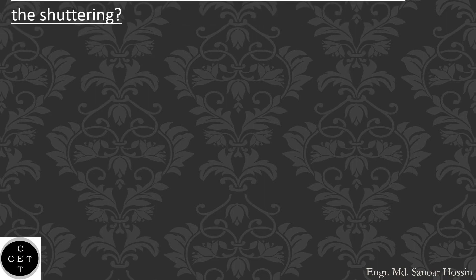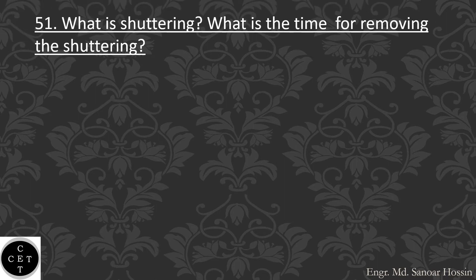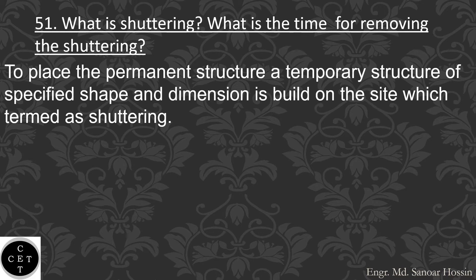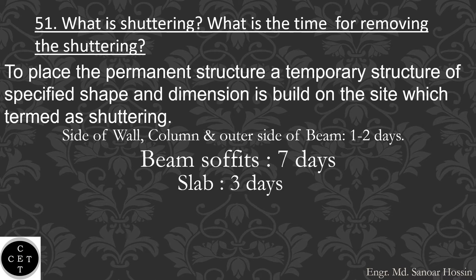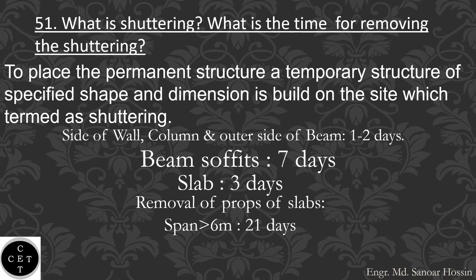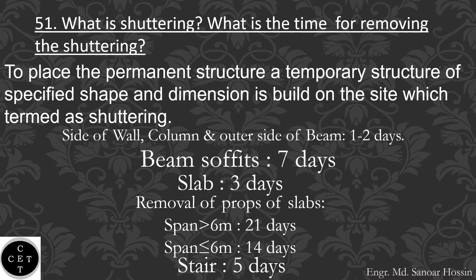Question number 51: What is shuttering and what is the time for removing the shuttering? To place the permanent structure, a temporary structure of specified shape and dimension is built on the site, which is termed as shuttering. Side of wall, column and outer side of beam: 1 to 2 days. Beam soffits: 7 days. Slab: 3 days. Removal of props of slabs — span more than 6 meters: 21 days; span less than or equal to 6 meters: 14 days. Stairs: 5 days.